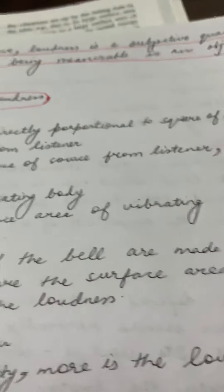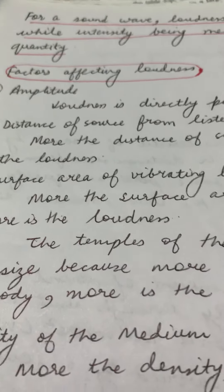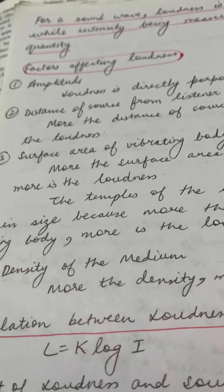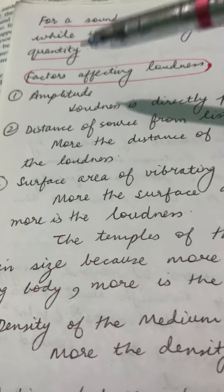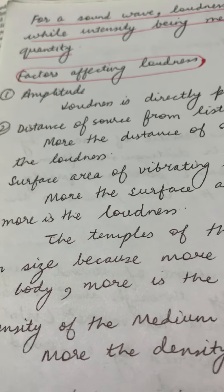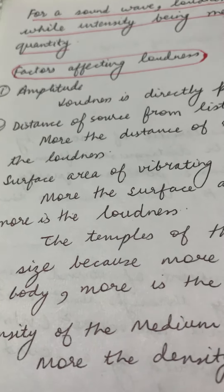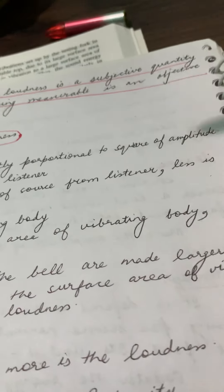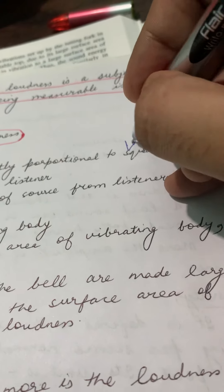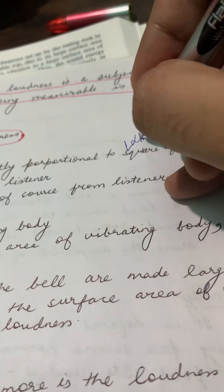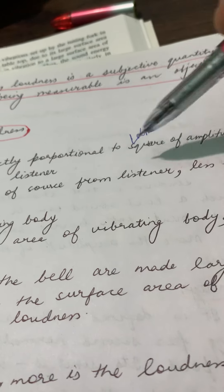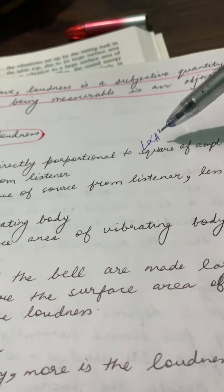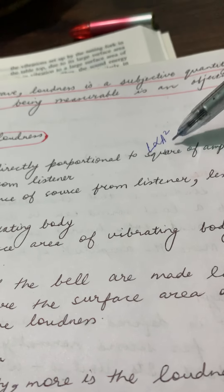Now, what are the factors affecting loudness? The first factor is amplitude. You have to remember: loudness is directly proportional to the square of the amplitude — L is directly proportional to amplitude squared. I will also solve numerical problems on this in the last video wherever this formula is used. Remember this.